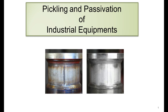Welcome to the channel Learning Engineering Solutions. In this video you will learn about the pickling and passivation of industrial equipment. Pickling and passivation are metal surface treatments to clean and protect stainless steel in the process industry. Pickling removes foreign matter like grease, oil, rust, or scale, while passivation provides a dense passive layer of chromium oxide on the metal surface.